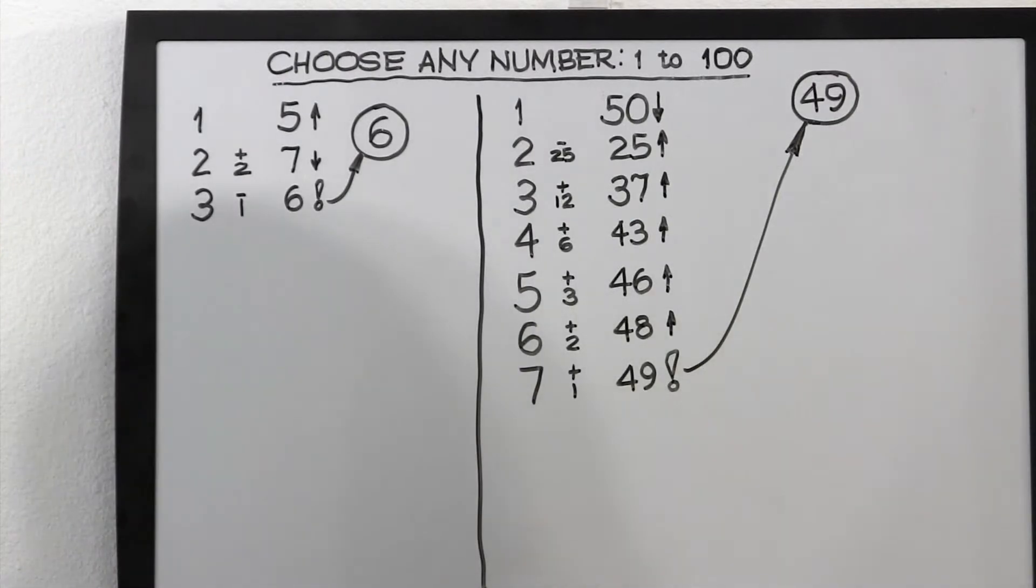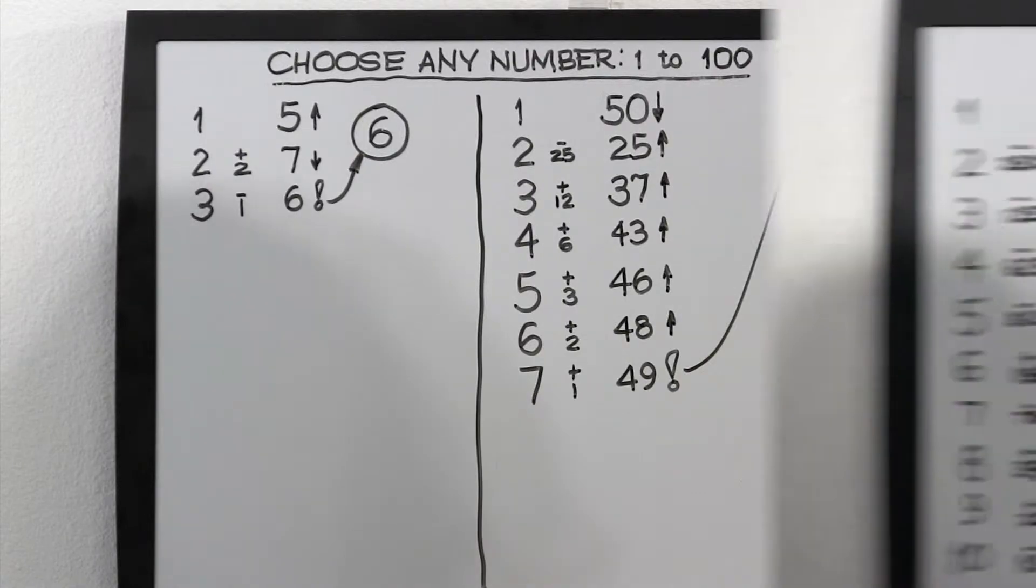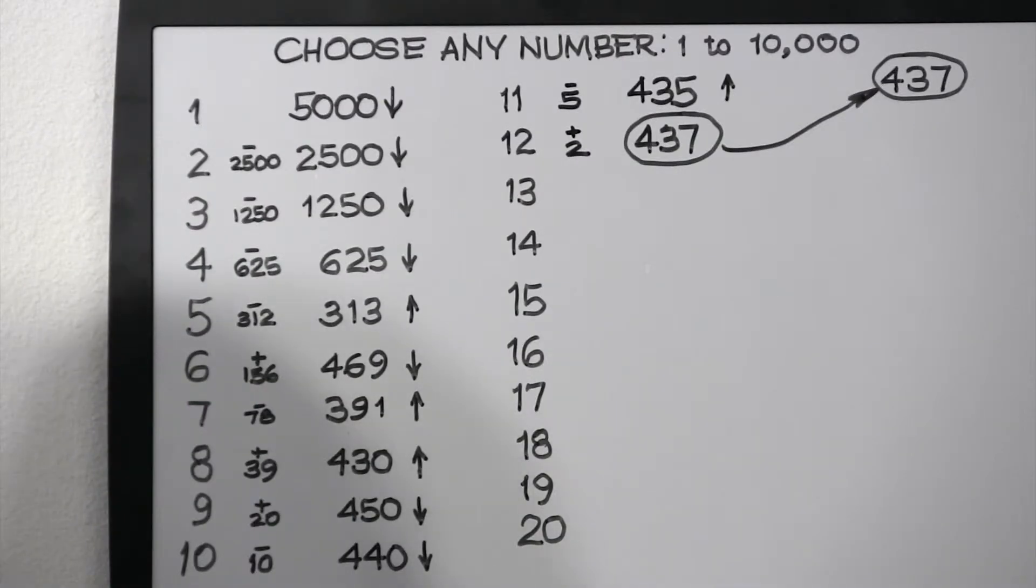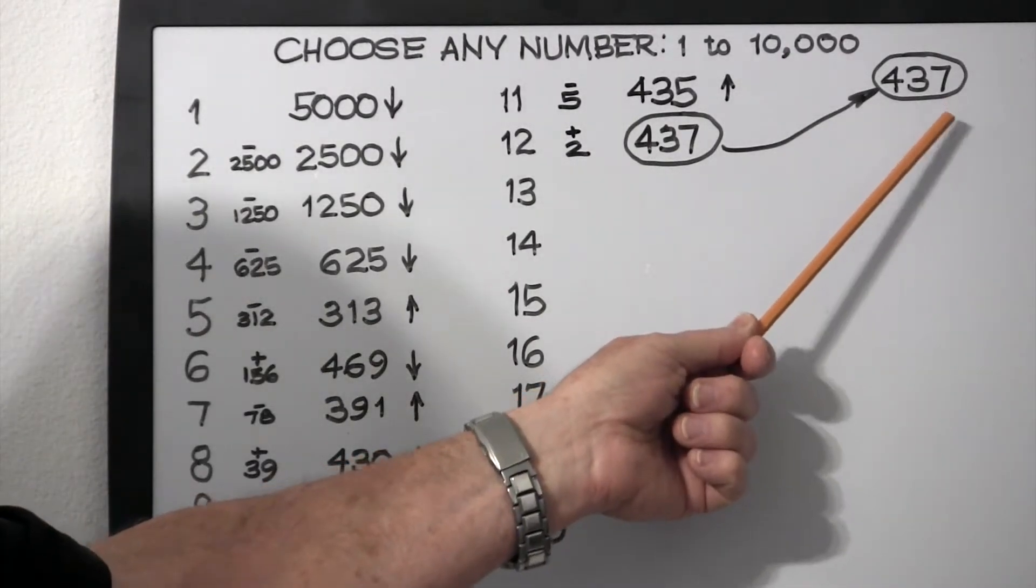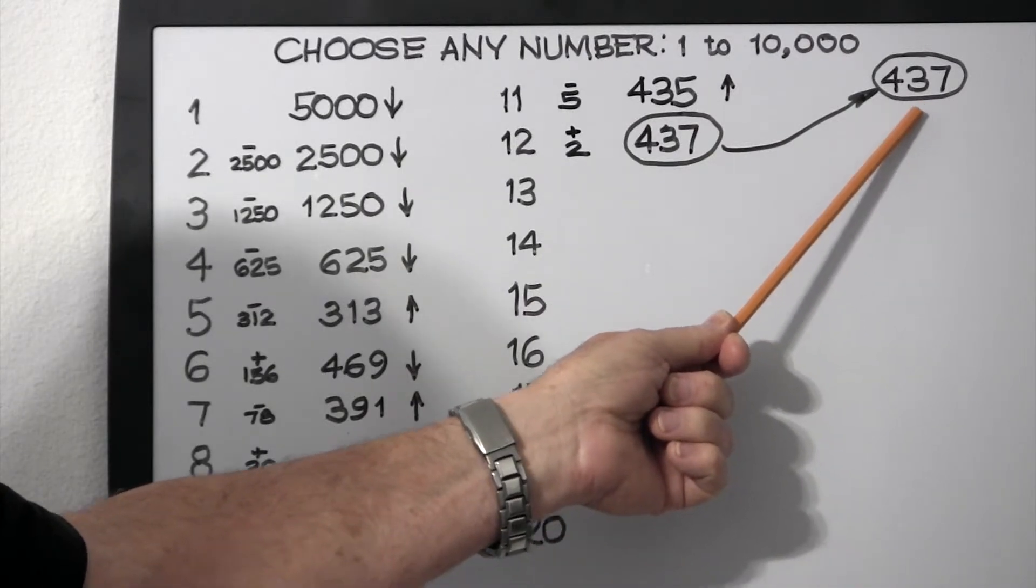Okay, now that you have this principle in mind, we're ready to go on to the 1 to 10,000 example. So now we're confronted with the problem of guessing a number between 1 and 10,000. For the purposes of this illustration, we'll say that the person has chosen 437.